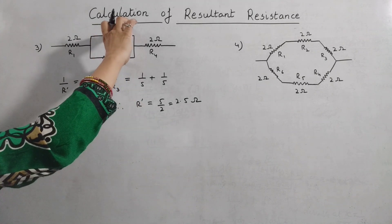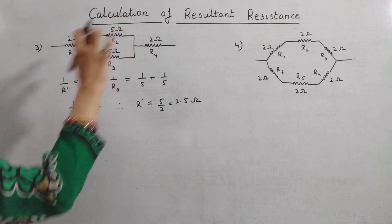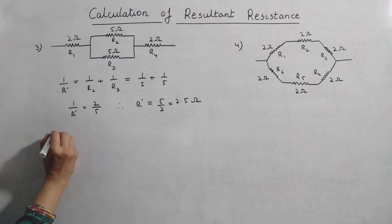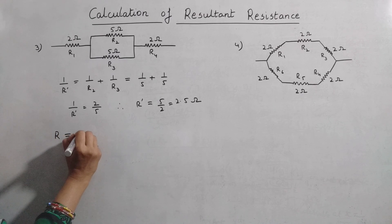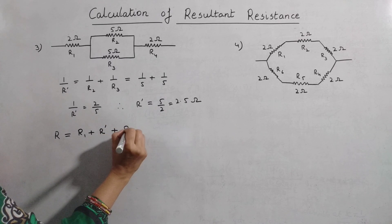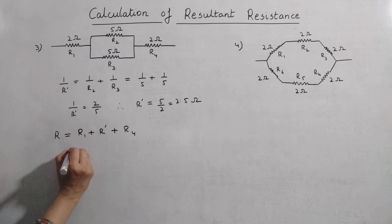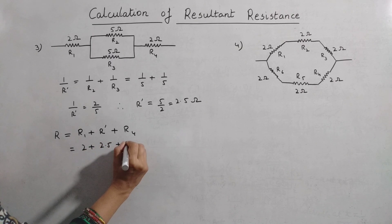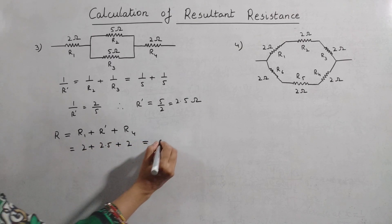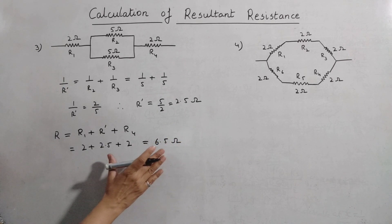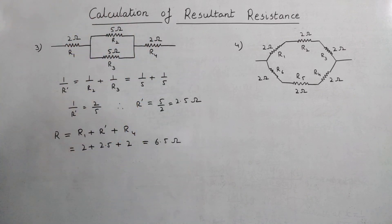This is the resultant of R2 and R3. Now R1, R' and R4 are all in series. So the total resistance R will be equal to R1 plus R' plus R4, which sums up to be 2 plus 2.5 plus 2, that is 6.5 ohms. This is the resultant resistance of the given circuit.